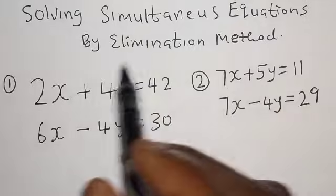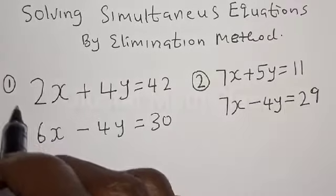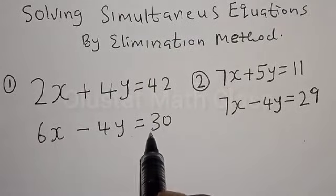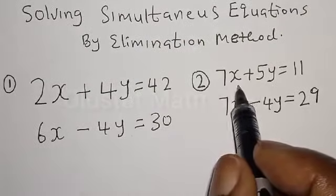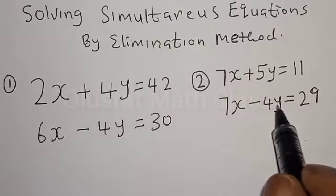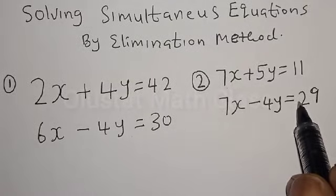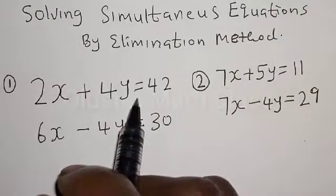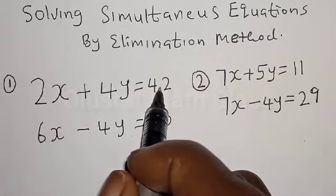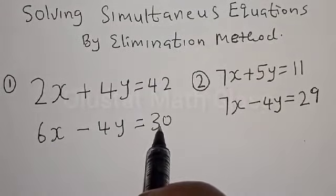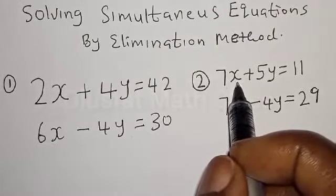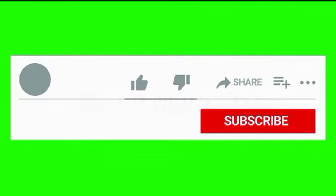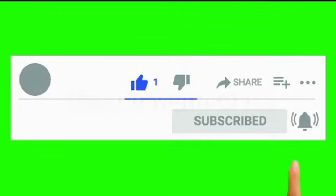Solving simultaneous equations by elimination method. Question one: 2x plus 4y is equal to 42, and 6x minus 4y is equal to 30. Question two: 7x plus 5y is equal to 11, and 7x minus 4y is equal to 29. Hi everyone, welcome to my class. In today's class we want to solve simultaneous equations by elimination method. Before we proceed, please don't forget to like, share, comment and subscribe.